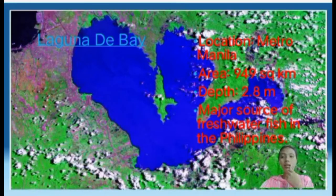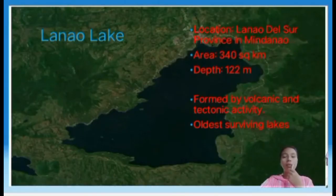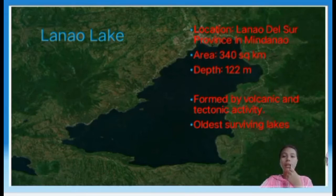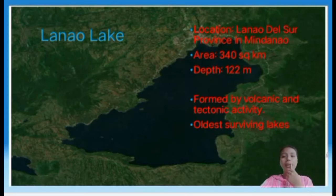The second largest lake in the Philippines is Lake Lanao. It has an area of 340 square kilometers and a depth of 122 meters. It is located in Mindanao within the Lanao del Sur province and is also the largest lake in Mindanao. Formed by volcanic and tectonic activity, it is one of the oldest surviving lakes in the Philippines. It has four rivers and the Agus River as its only outflow, with a hydroelectric plant along the Lanao-Agus River system that supplies 70% of the island's electricity.